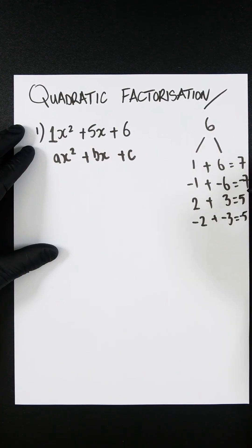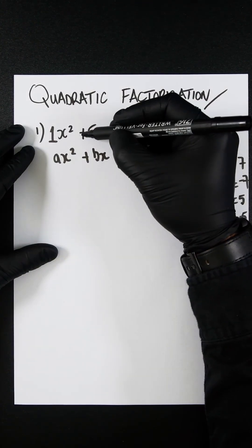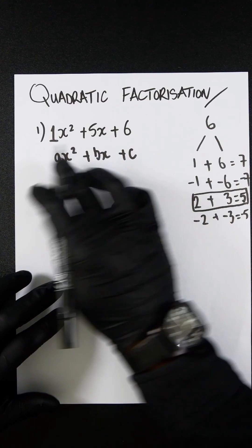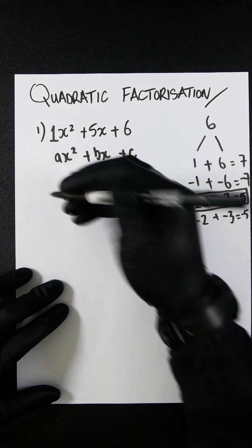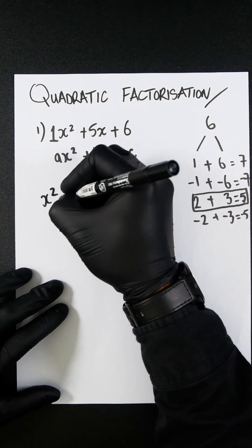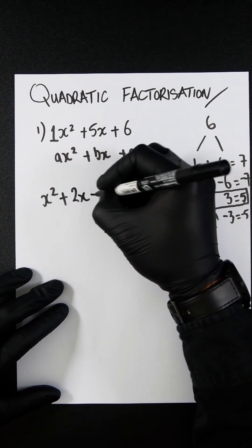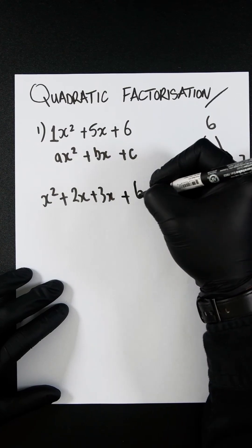You're going to look and see which number equals the b term. This is +5, so positive 5. The one we're looking for is 2 + 3, which equals 5. You can now rewrite this expression as x² + 2x + 3x + 6.